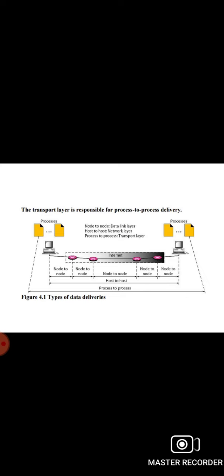The server process must also define itself with a port number; however, it cannot be chosen randomly. If the server assigns a random port number, the client process that wants to access that server will not know the port number. One solution would be to send a special packet to request the port number of the specific server, but this requires more overhead. So the internet has decided to use universal port numbers for servers, called well-known port numbers.